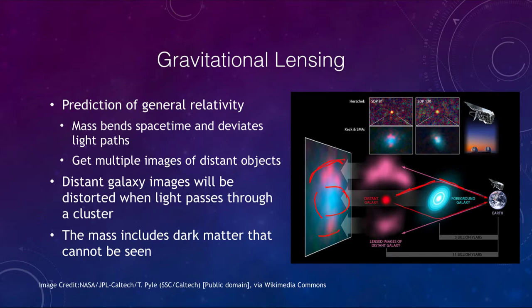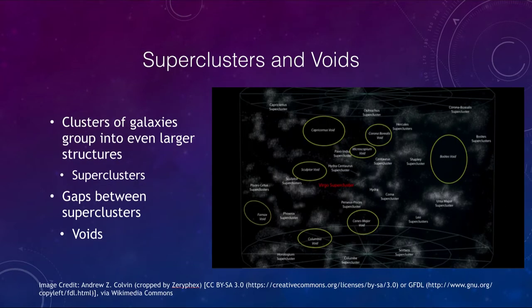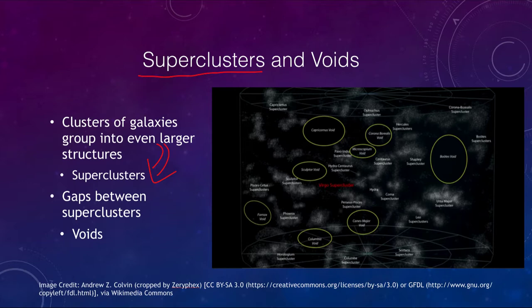What we find is that galaxies are grouped into clusters of clusters that we call superclusters. These clusters of galaxies group into even larger structures called superclusters. We can see a map of the universe showing these various clusters and superclusters. For example, the Coma cluster becomes part of a supercluster — they become even larger groupings, with superclusters being just clusters of clusters.